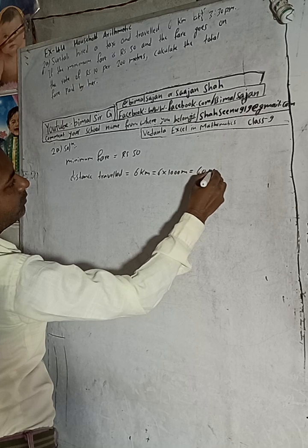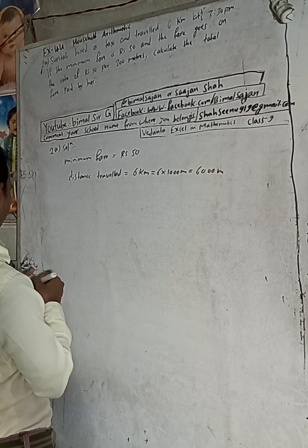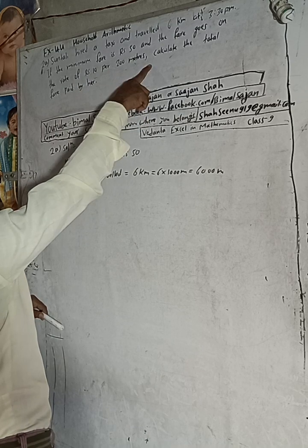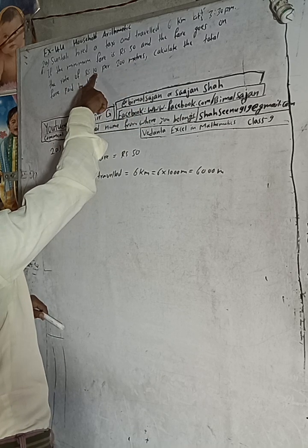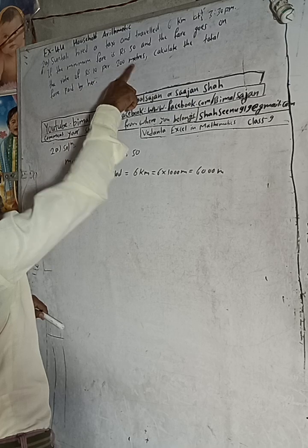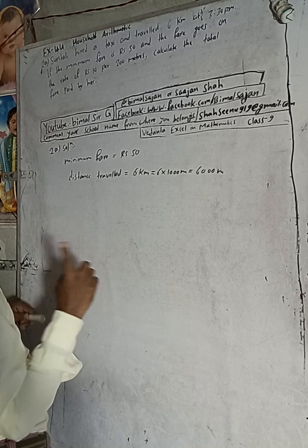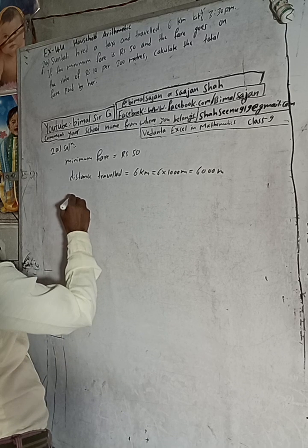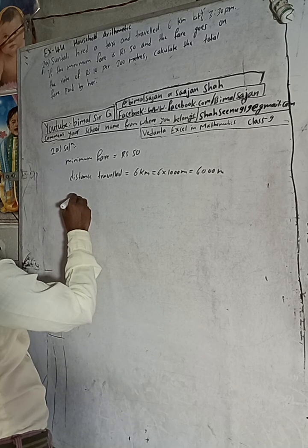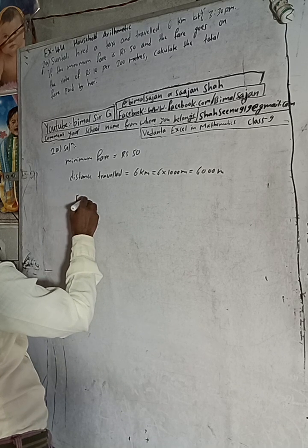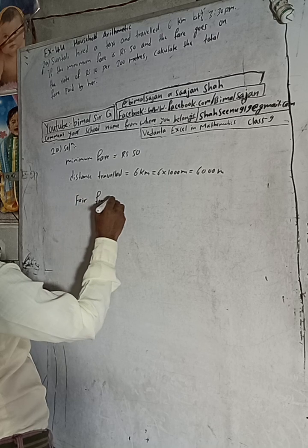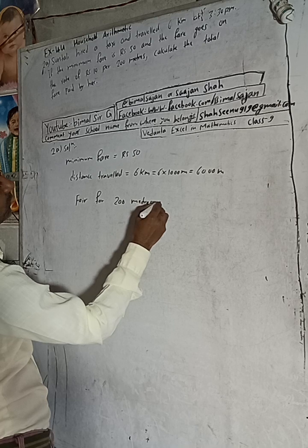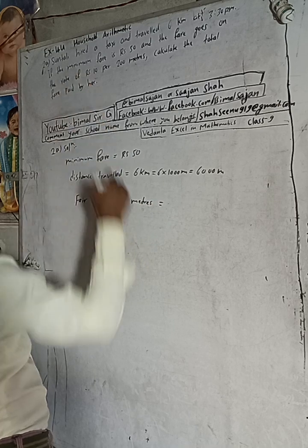Now use the unitary method. From the given rate: Rs 10 for 200 meters. Using the unitary method, we calculate the fare for 1 meter first. For 200 meters the fare is Rs 10.